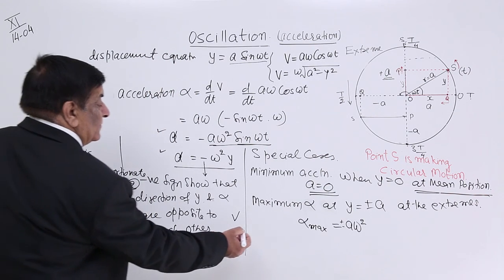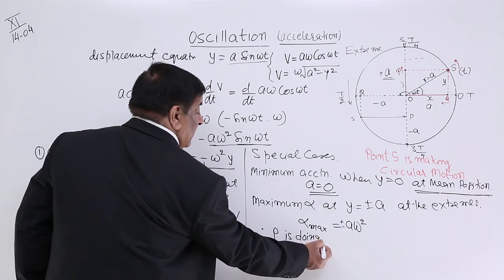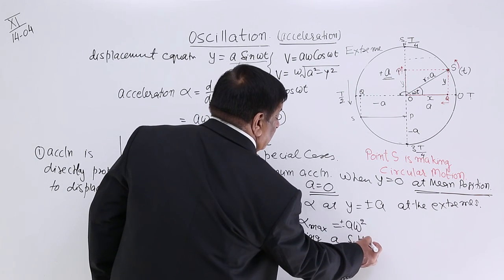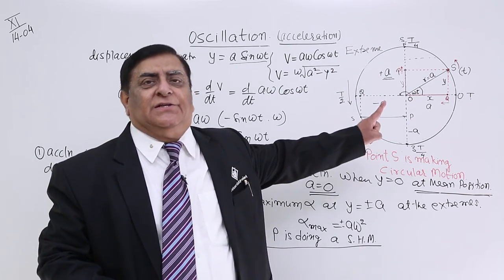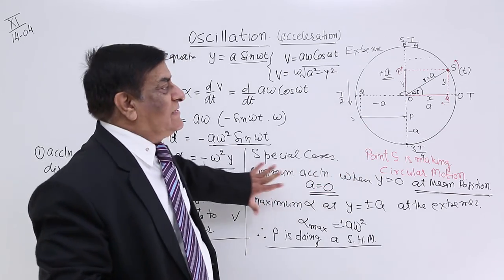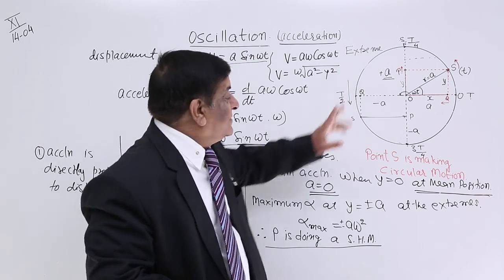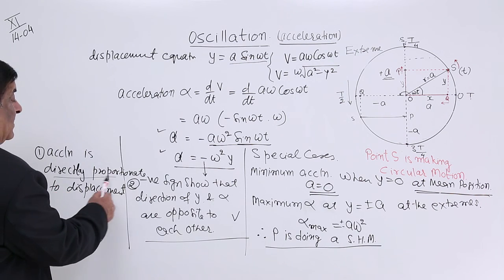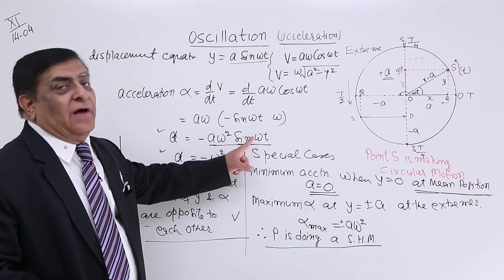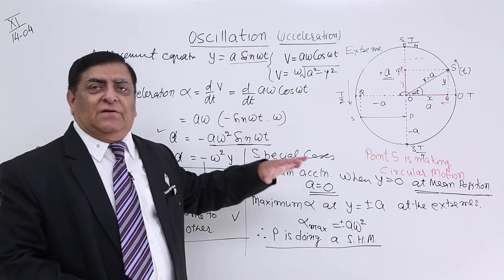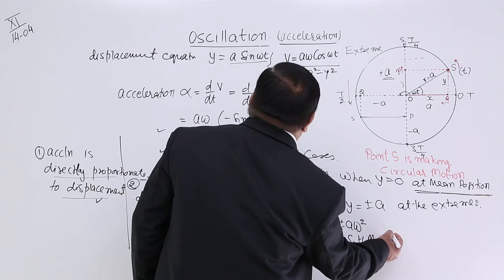Therefore P is doing simple harmonic motion. What we have been telling all along — that it is doing an oscillation — we can now say it is doing simple harmonic motion, because it is meeting all three criteria: one, acceleration is directly proportional to displacement; two, it is always directed towards the center; and three, it is represented by a simple harmonic function of trigonometry, either sine or cosine. Therefore the motion of P is simple harmonic motion.